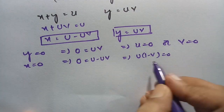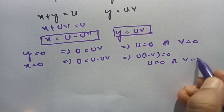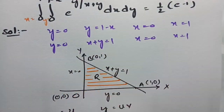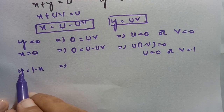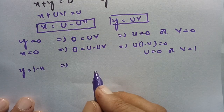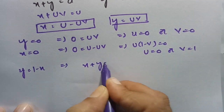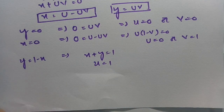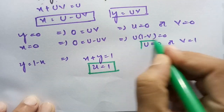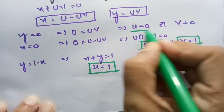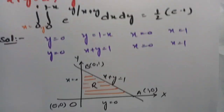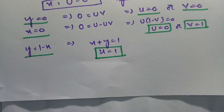For the limit y equals 1 minus x: since x plus y equals u, substituting gives u equals 1. Summarizing the transformed limits: when y equals 0, we get v equals 0; when x equals 0, we get v equals 1; when x plus y equals 1 (i.e., y equals 1 minus x), we get u equals 1; and u equals 0 corresponds to the origin. These are the new limits in uv-coordinates.